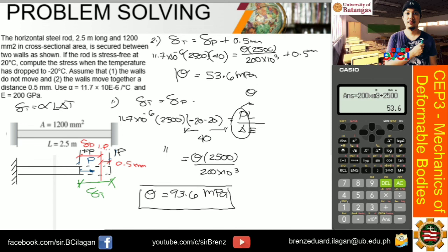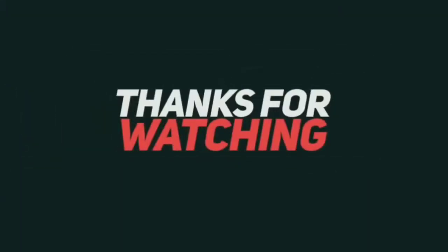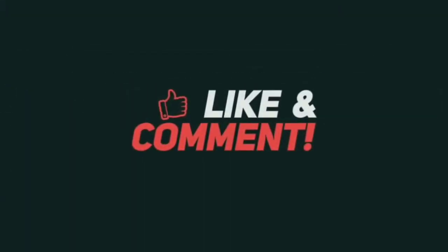Final answers: for case 1 (walls do not move), the stress developed is 93.6 megapascals. For case 2 (walls move together by 0.5 mm), the stress developed is 53.6 megapascals. Let's proceed with the next problem.